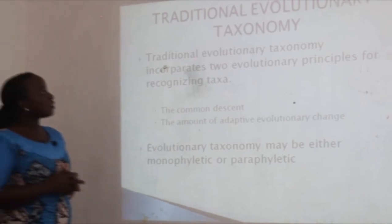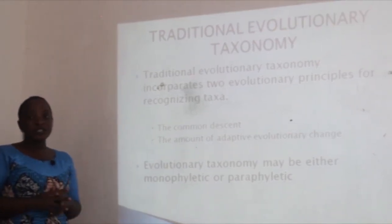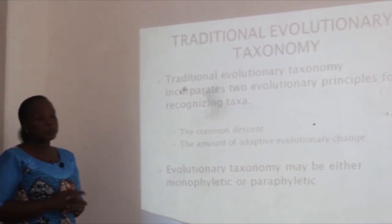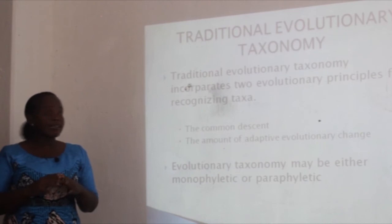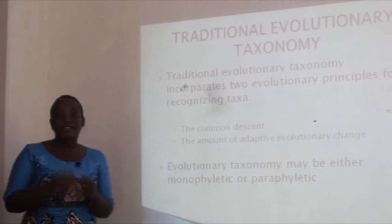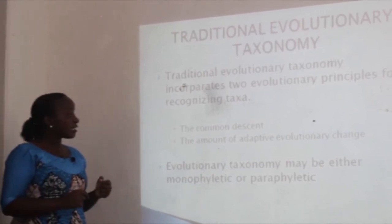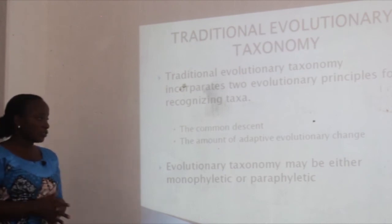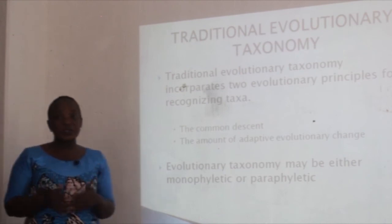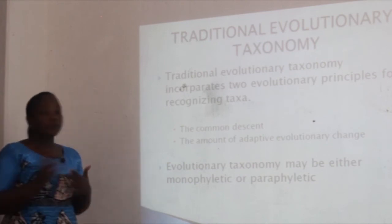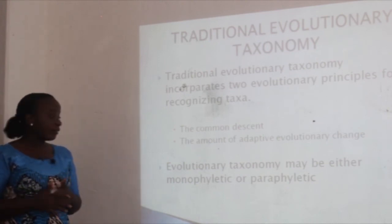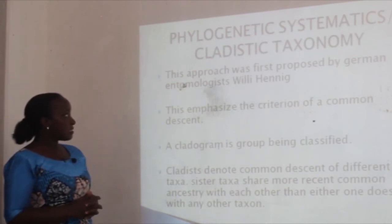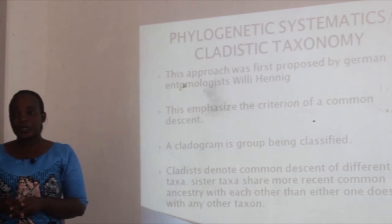Traditional evolutionary taxonomy incorporates two evolutionary principles for recognizing taxa: the first is common descent, and the second is the amount of adaptive evolutionary change. Evolutionary taxonomy may be either monophyletic or paraphyletic. Phylogenetic systematics, or cladistic taxonomy, is another approach.